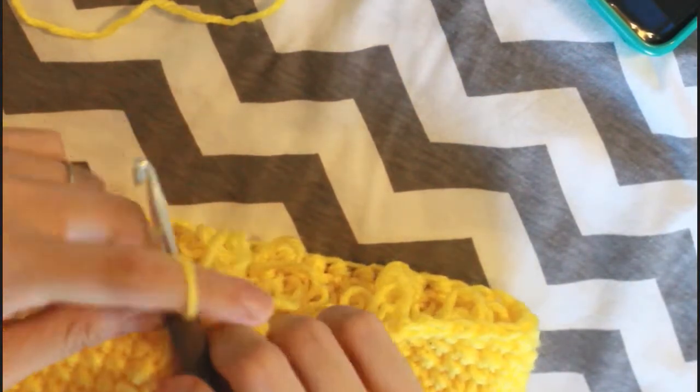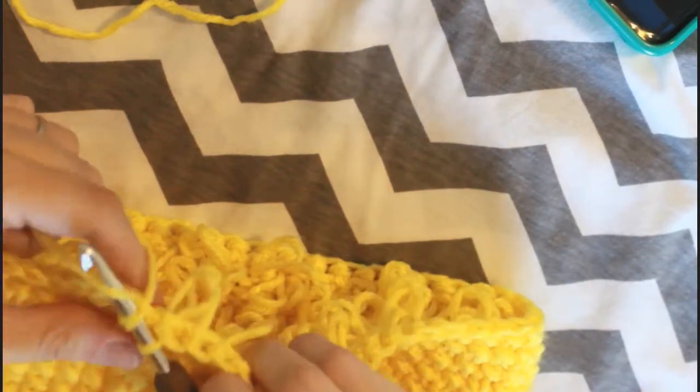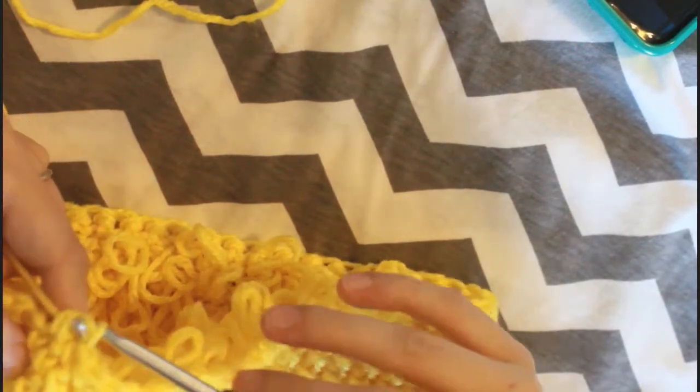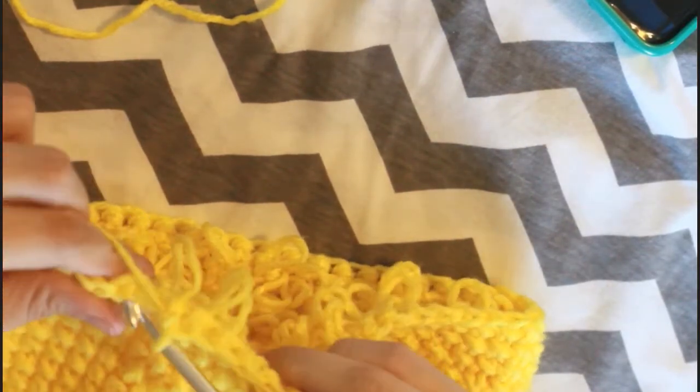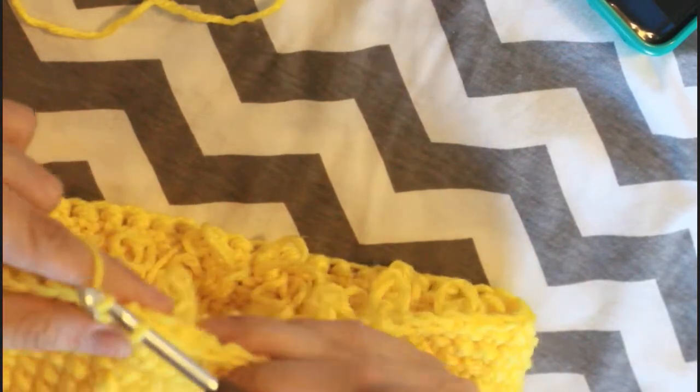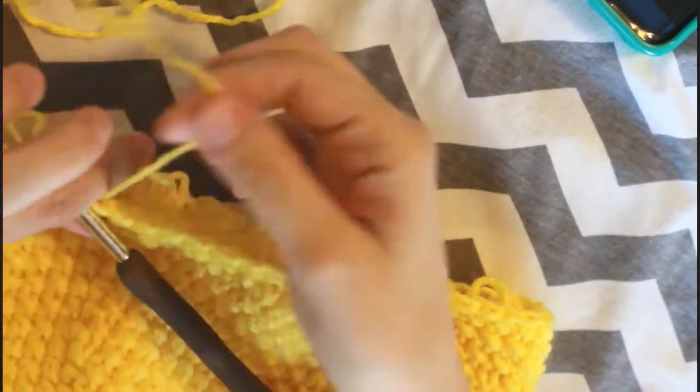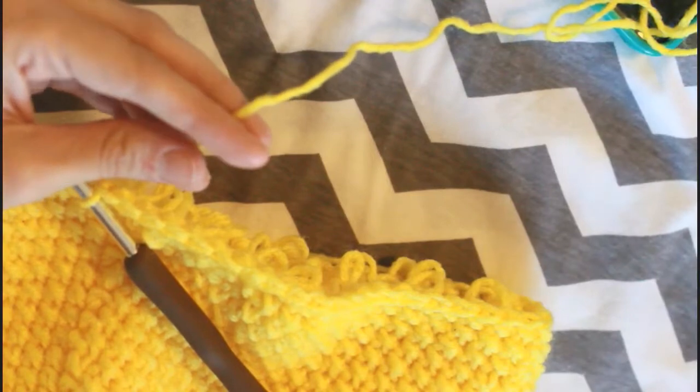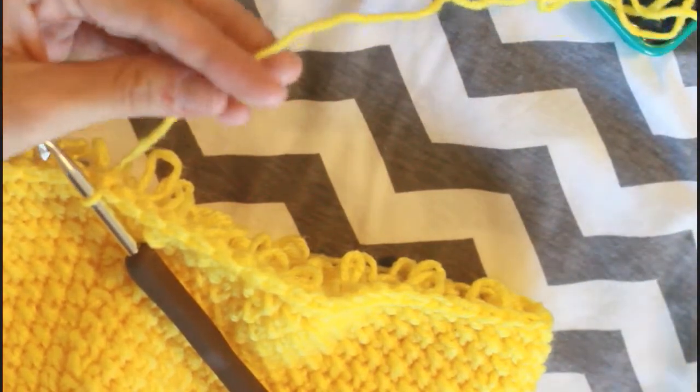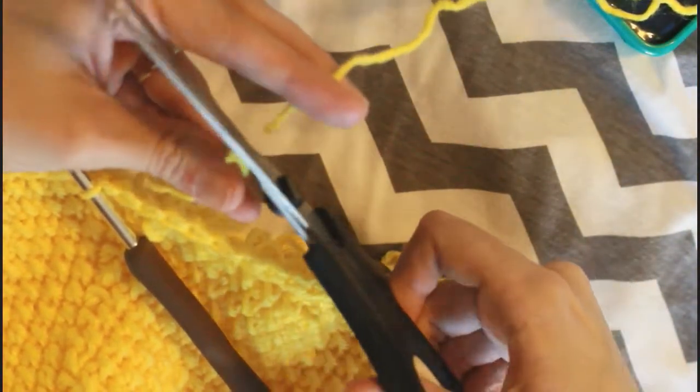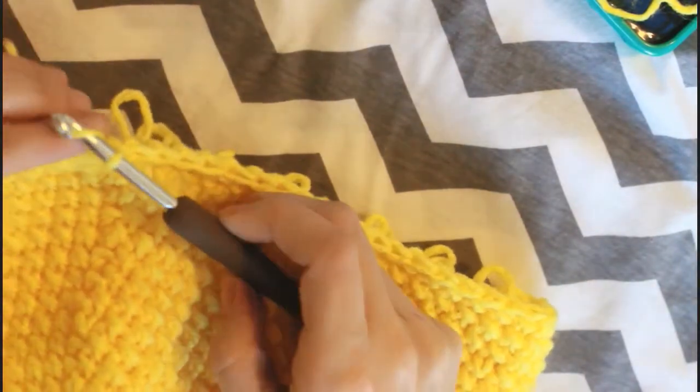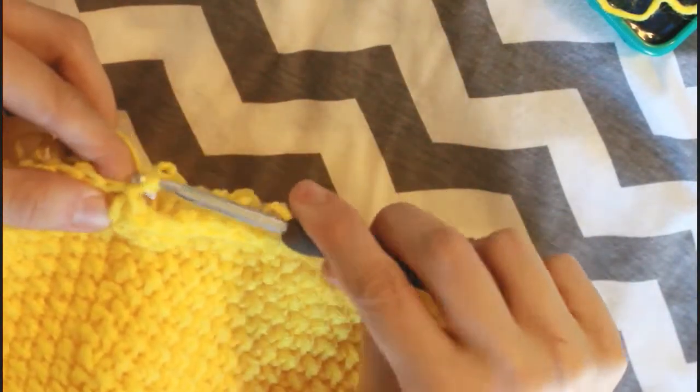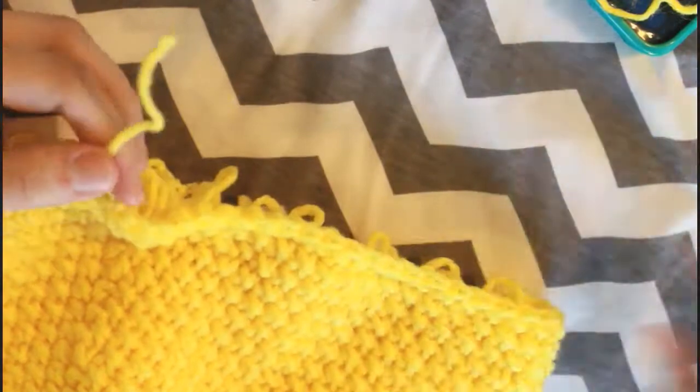Ok, so once you get to the end of round number 16, close with a slip stitch just as all the previous rounds. I'm gonna fasten off, cut our yarn. Do one last time to secure work and make sure it doesn't unravel.